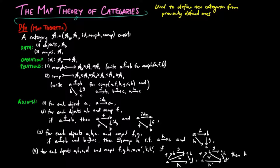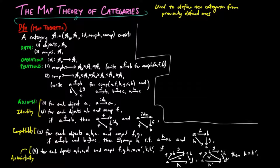The axioms here correspond to the identity, compatibility, and associative axioms in the object morphism theory and the arrows theory of categories.